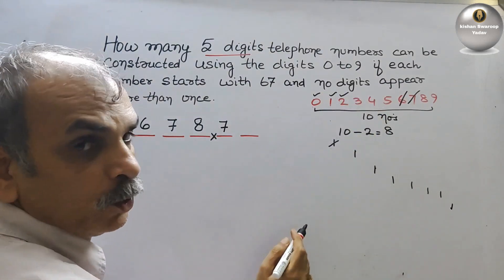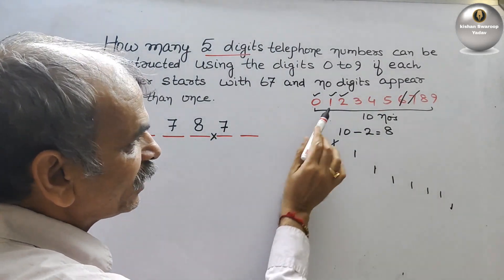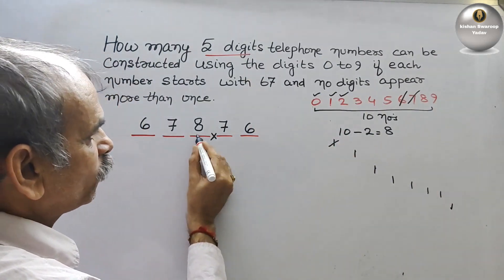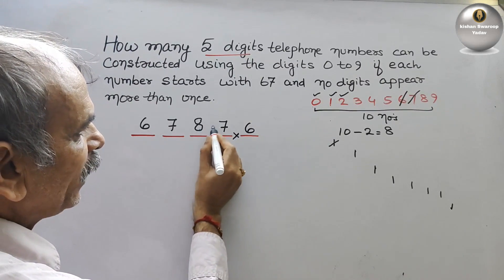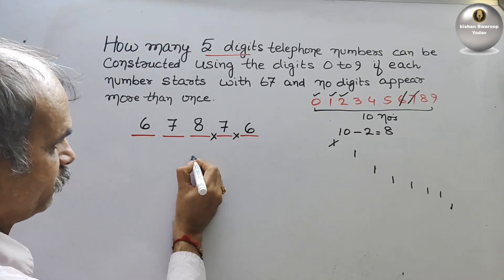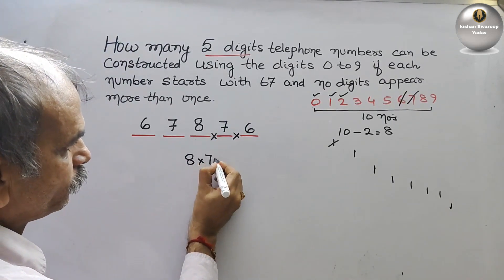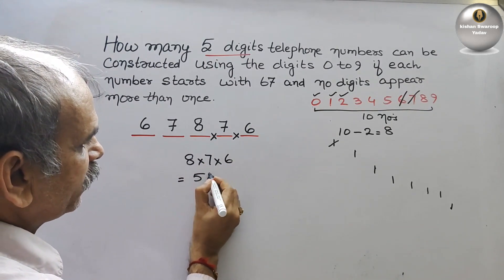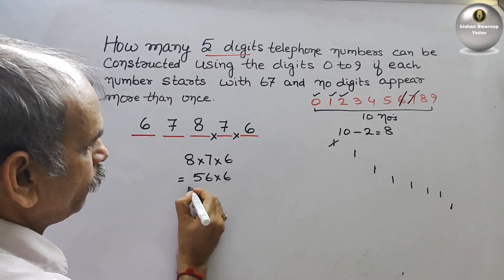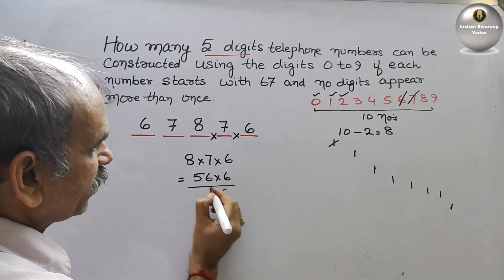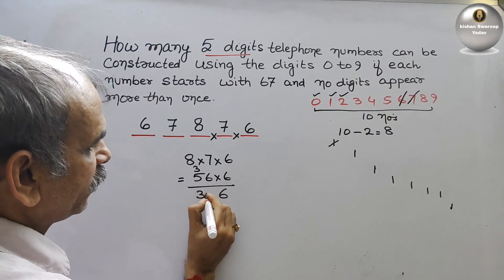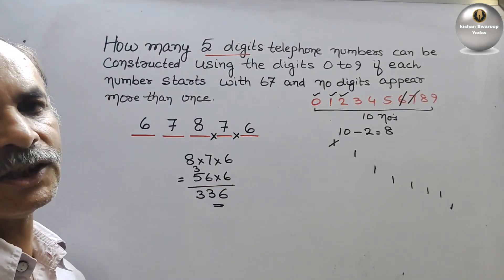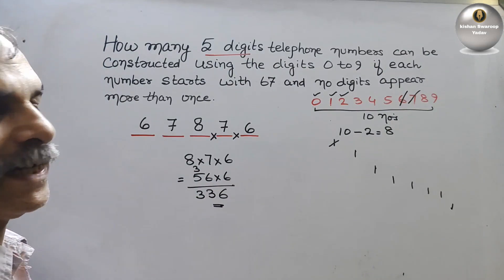So we can arrange this in your 6 places. So now we will get our answer as 8 into 7 into 6. This is equal to we can say 56 into 6: 36, 3 carry 30, 33. So your answer is 336 connections or we can construct that.